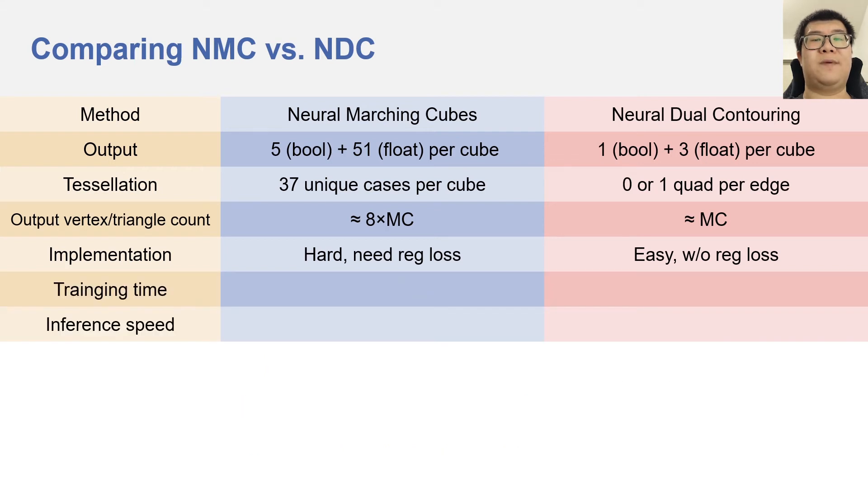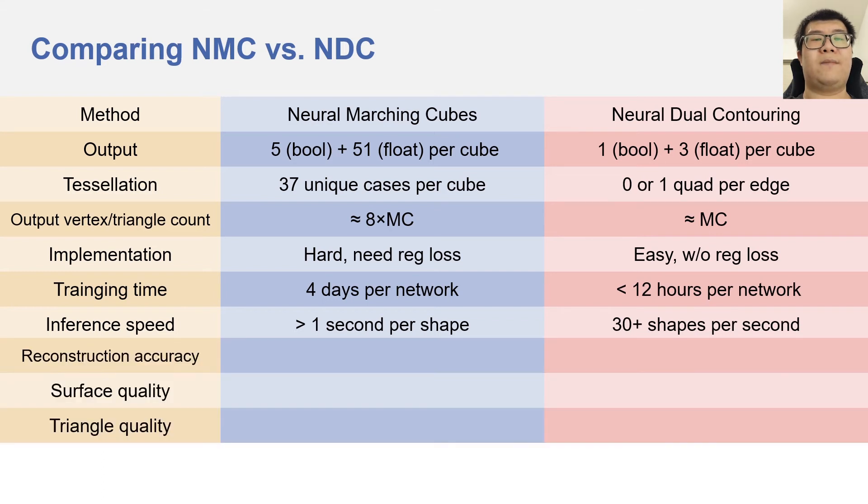Next, training time and inference speed. NMC takes 4 days to train one network, and ours takes less than 12 hours. NMC takes more than a second to process each shape, and ours can process more than 30 shapes per second. There are other comparisons, which I will talk more about in the experiment section.